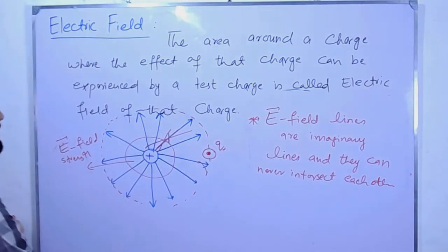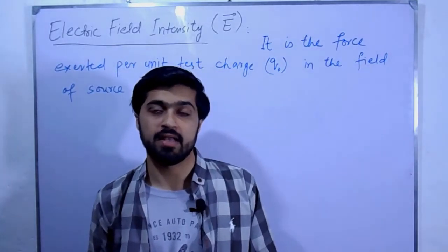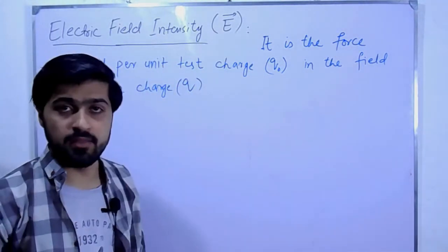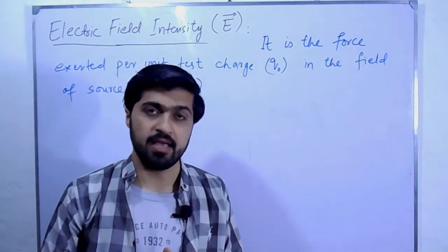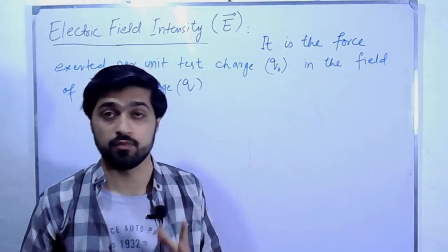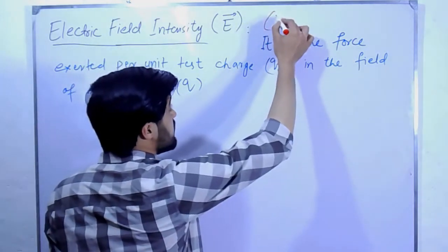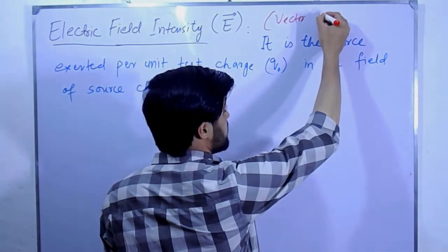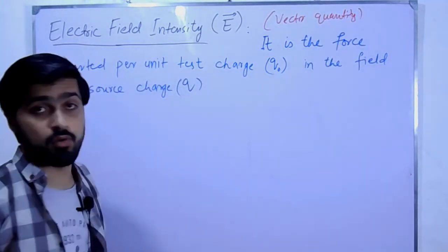Ab electric field intensity ko explain karte hain. Electric field intensity is represented by E (capital E with a vector). We put a vector on it because electric field has a specific direction — for a positive charge it is radially outward, and for a negative charge it is radially inward. That's why electric field intensity is a vector quantity — it has both magnitude and direction.